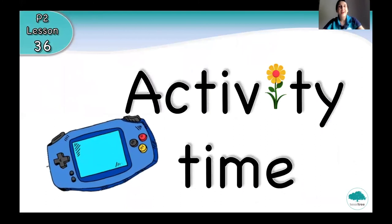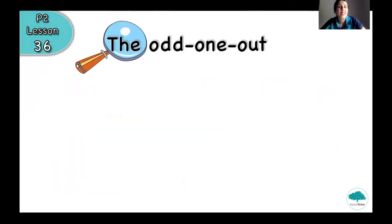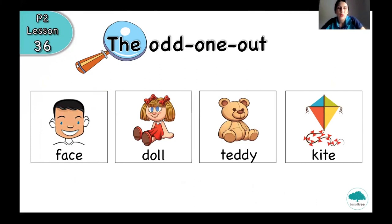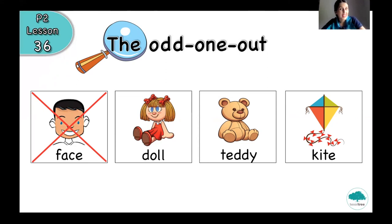Now it's activity time! Are you ready? Let's go. We are going to do an activity called 'the odd one out.' Look at the pictures — we have four pictures and we have to choose the odd one out. One picture will be different from the others. We have face, doll, teddy, and kite. What picture is the odd one out? Face — that's correct! Face is different because face is a body part, and doll, teddy, and kite are toys.